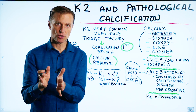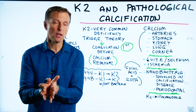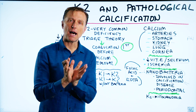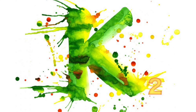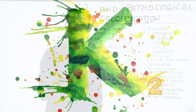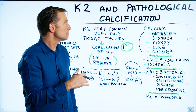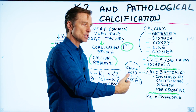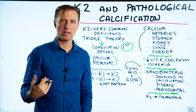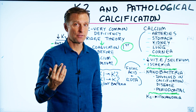Now let me shift gears to vitamin K2. Vitamin K1 has everything to do with clotting and preventing bleeding. Vitamin K2 is completely different — it's involved in about 17 different proteins involving the movement of calcium out of the soft tissue, back into the bone, out of the soft tissue, and into the teeth, for example.